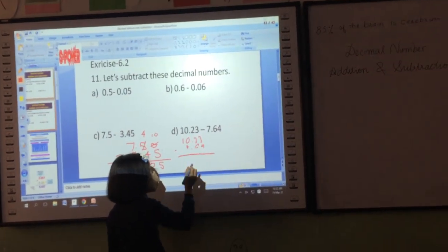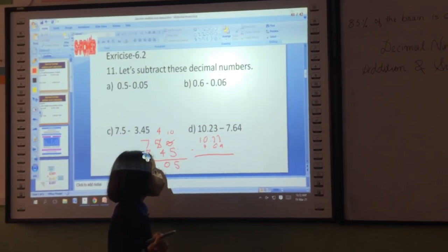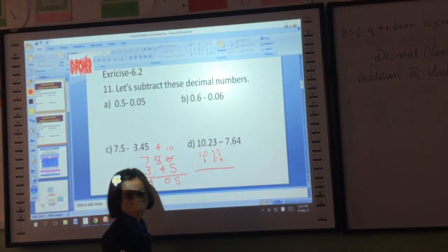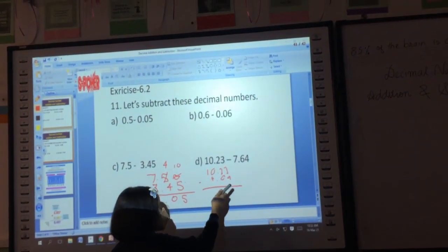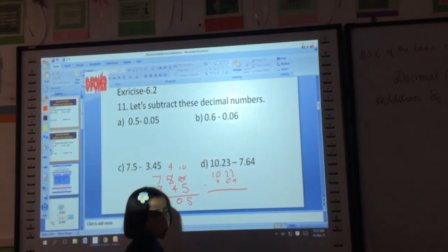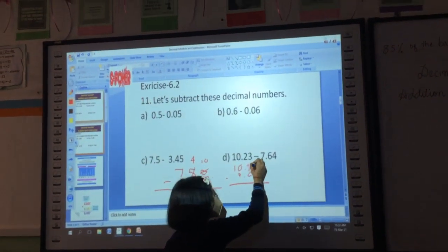Then what do you do here? Can you subtract here, 3 minus 4? No. Why? Because of smaller number at the top side, yes? Then what do you do here? Borrowing one. Okay.